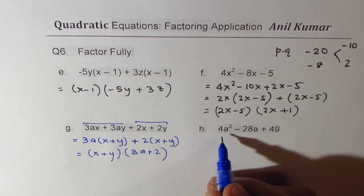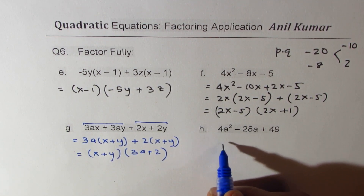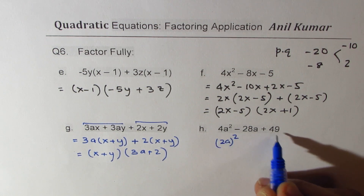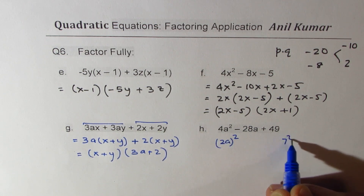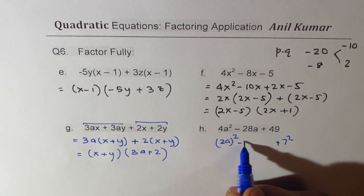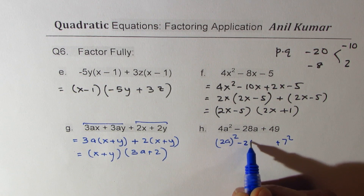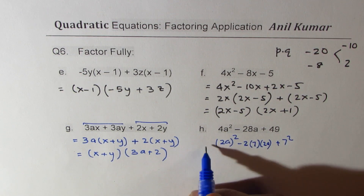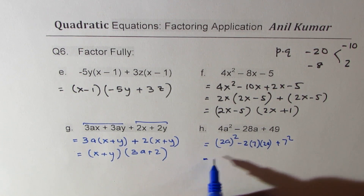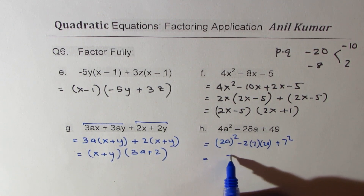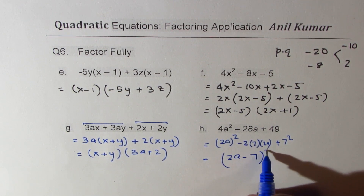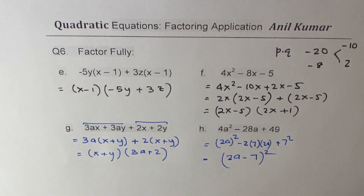The last one involves a perfect square. We write 4a² as (2a)² and 49 as 7². The middle term is 2 × 7 × 2a, so we can write the expression as (2a - 7)². That's correct.